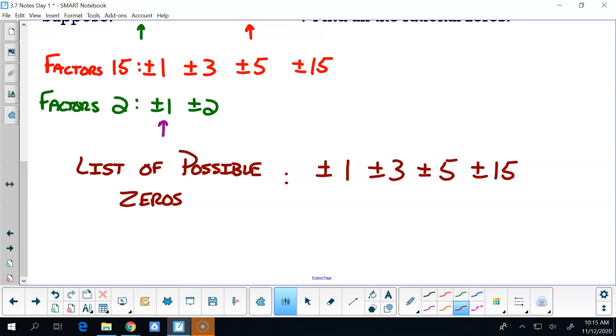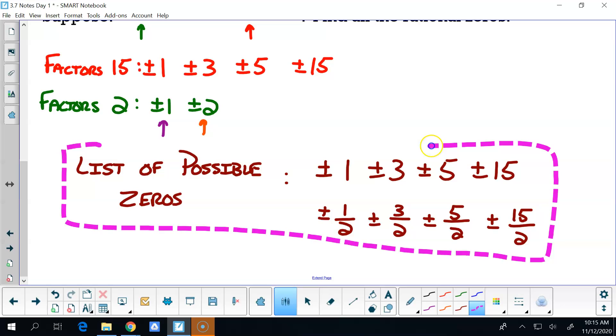Then I take all of the red numbers and rinse, lather, and repeat with however many factors I have in green. In this case it's just one more, so it's two. So it would be plus or minus one half, plus or minus three halves, plus or minus five halves, plus or minus fifteen halves.